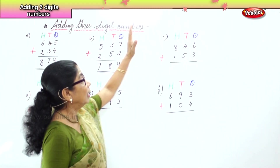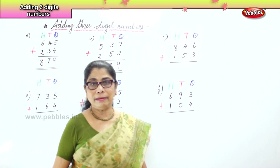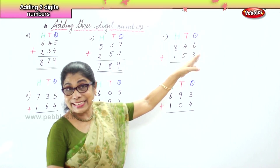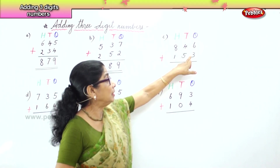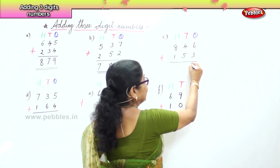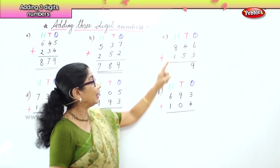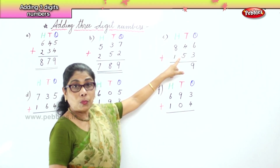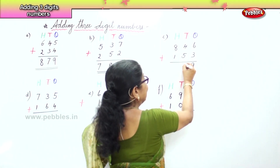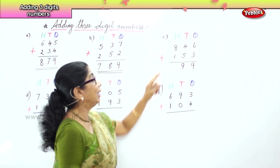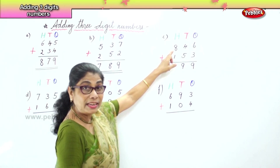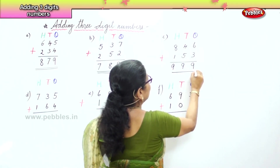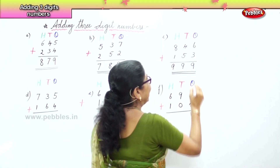We go to the next sum: ones, tens, hundreds. In the ones place you have six ones and three ones. What is six plus three? Nine ones. In the tens place you have four tens and five tens. What is five plus four? Nine tens. In the hundreds, you have eight hundred and one hundred. Eight plus one? Nine hundred. So you have nine hundred and ninety-nine.